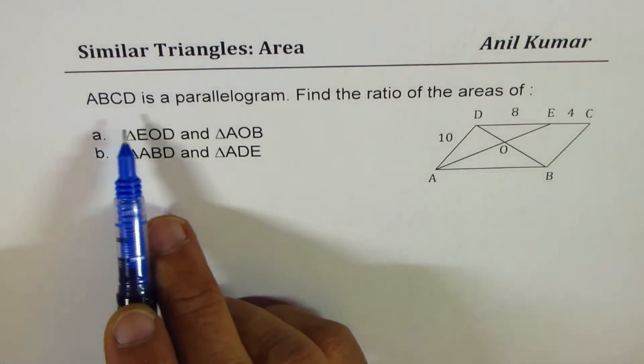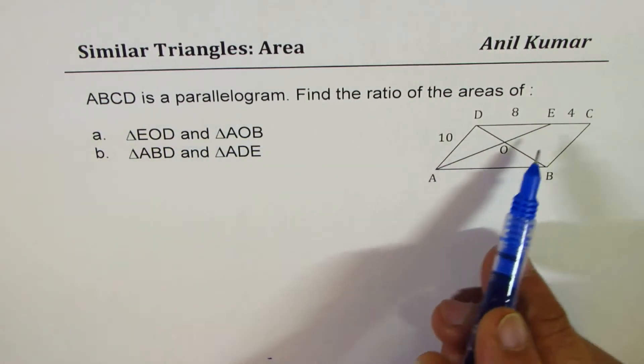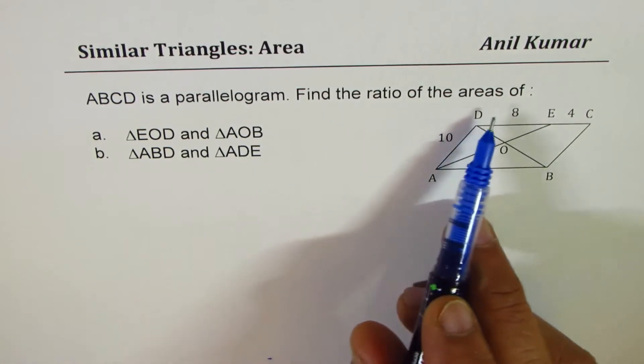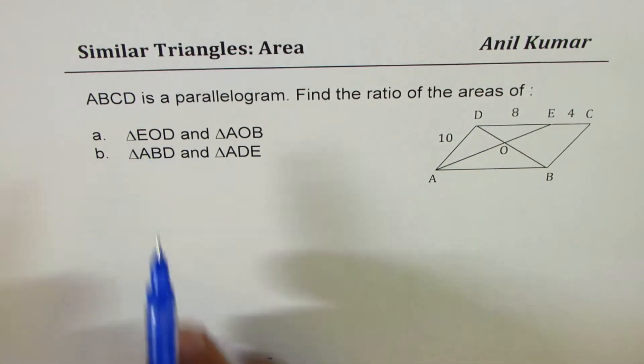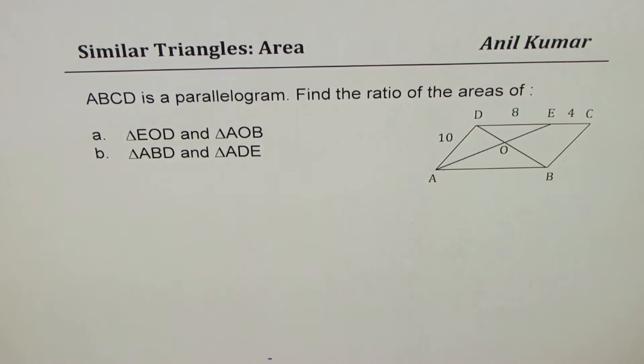The question here is ABCD is a parallelogram. Find the ratio of areas of triangle EOD and triangle AOB.